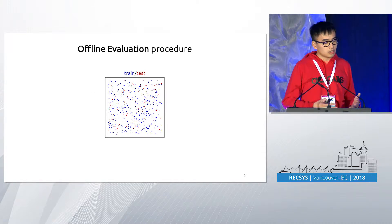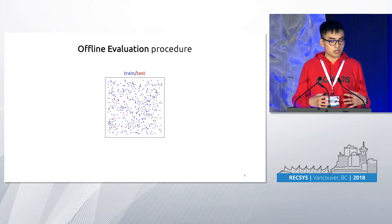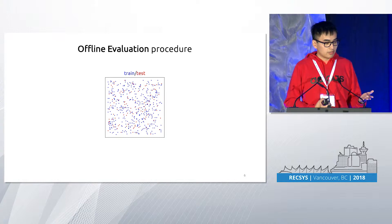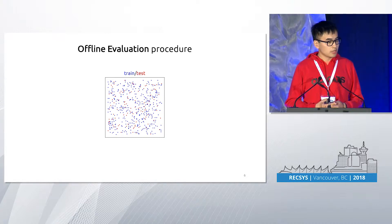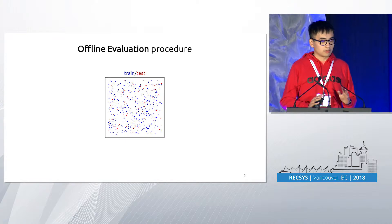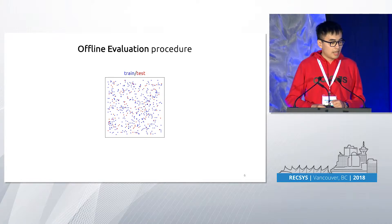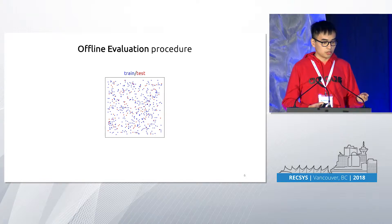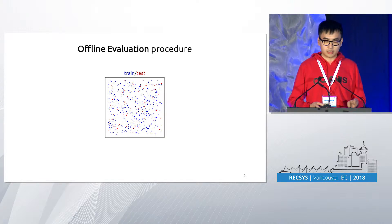Before I talk about the bias of offline evaluation, I want to give a quick overview of how such evaluation works. I will explain the evaluations through this user-item matrix. In this matrix, rows represent users and columns represent items. In production, we observe some user-item interactions, and the dot here means that user i interacted with item j.